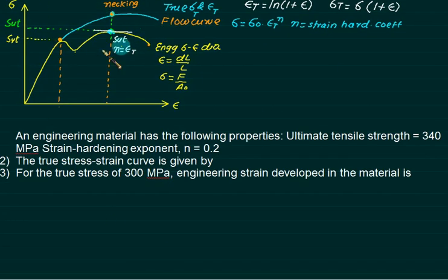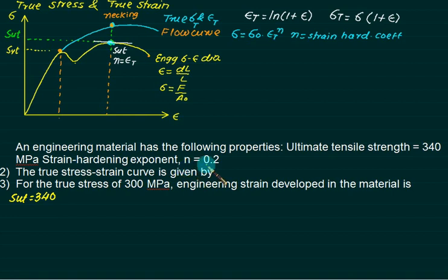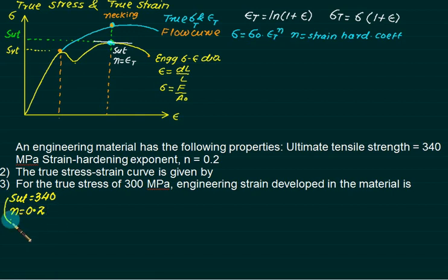This question is based on the diagram. An engineering material has the following properties: ultimate tensile strength SUT equals 340 MPa, and strain hardening coefficient n equals 0.2. For SUT only, n equals epsilon-t equals 0.2.